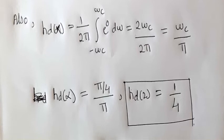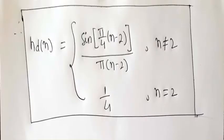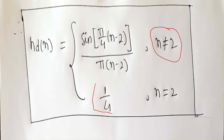For n equals alpha, hd of n is defined as omega c divided by pi. In the present numerical, omega c equals pi by 4, so hd of alpha equals 1 by 4. Since alpha equals 2, hd of 2 equals 1 by 4. Therefore, hd of n equals sin(pi by 4 times (n minus 2)) divided by pi times (n minus 2) for n not equal to 2, and hd of n equals 1 by 4 for n equals 2.